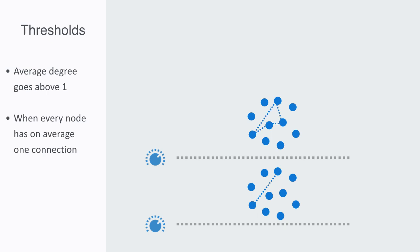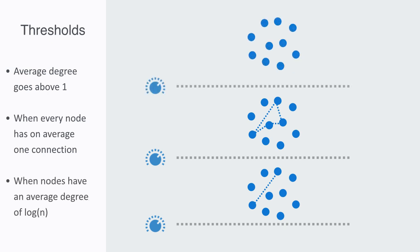We see giant components emerging within the network, that is one dominant cluster, and we start to have cycles, which means there are feedback loops in the network. Another threshold occurs when nodes have an average degree of log n. At this point, everything starts to be connected, meaning there is typically a path to all other nodes in the network.